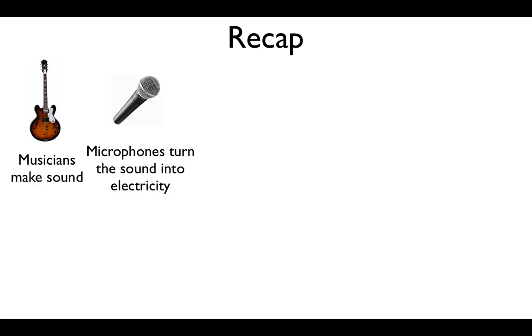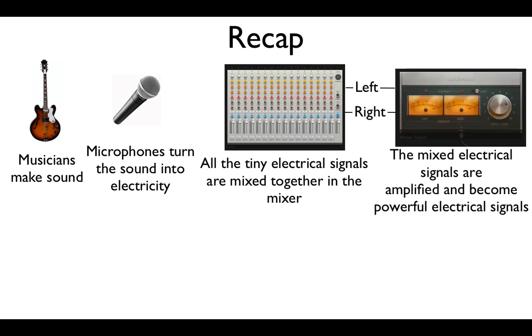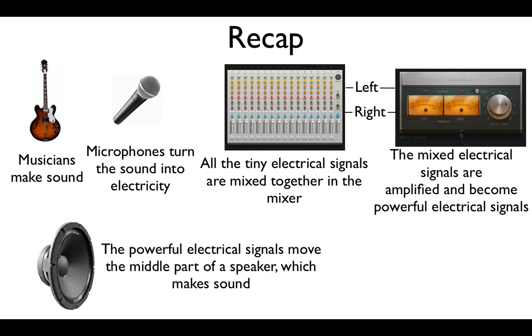So, let's recap. The musicians make sound. A microphone, or the musical instrument itself, turns that sound into electricity. These tiny electrical signals are mixed together in the mixer, which sends a left and right signal to the amplifier. The amplifier makes these weak signals strong enough to move the loudspeakers and they make the air vibrate, creating sound.